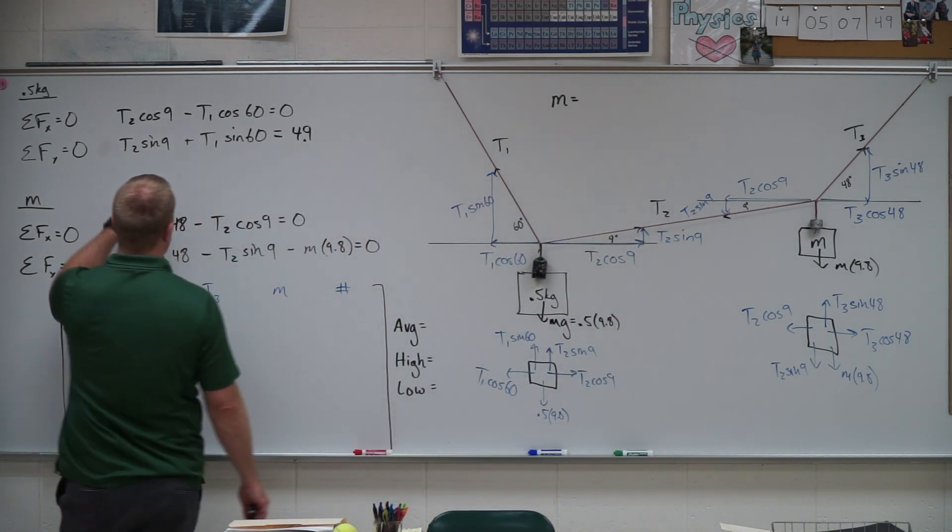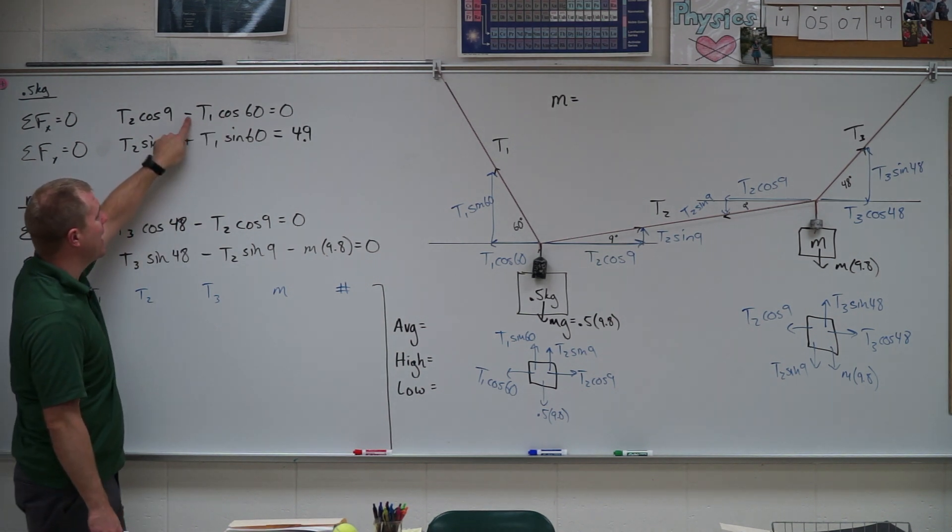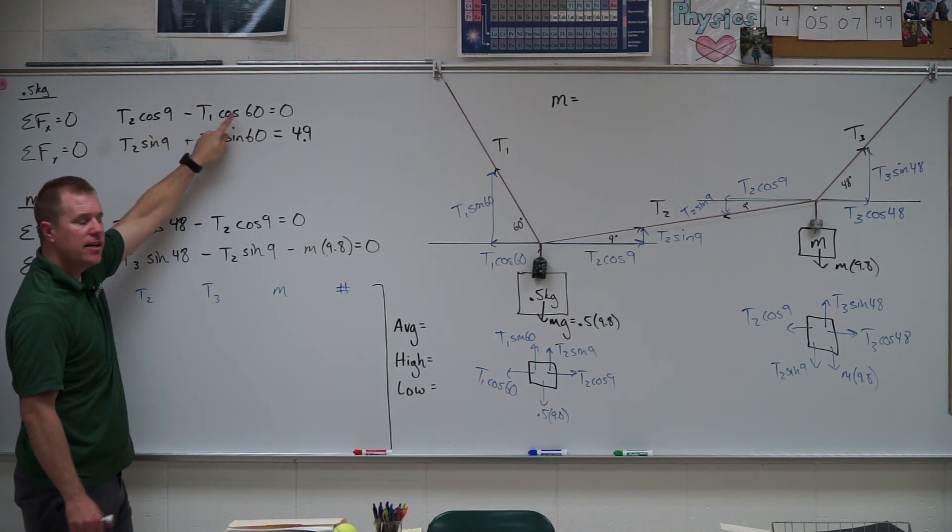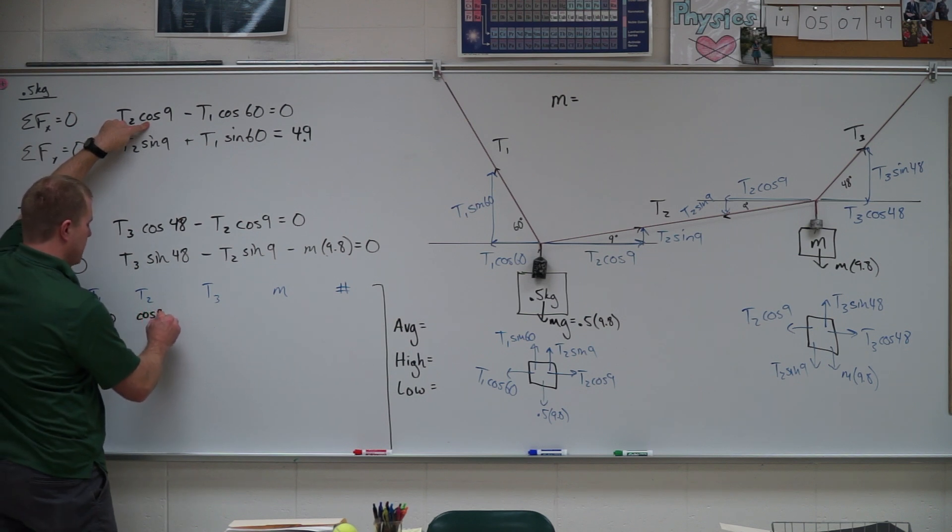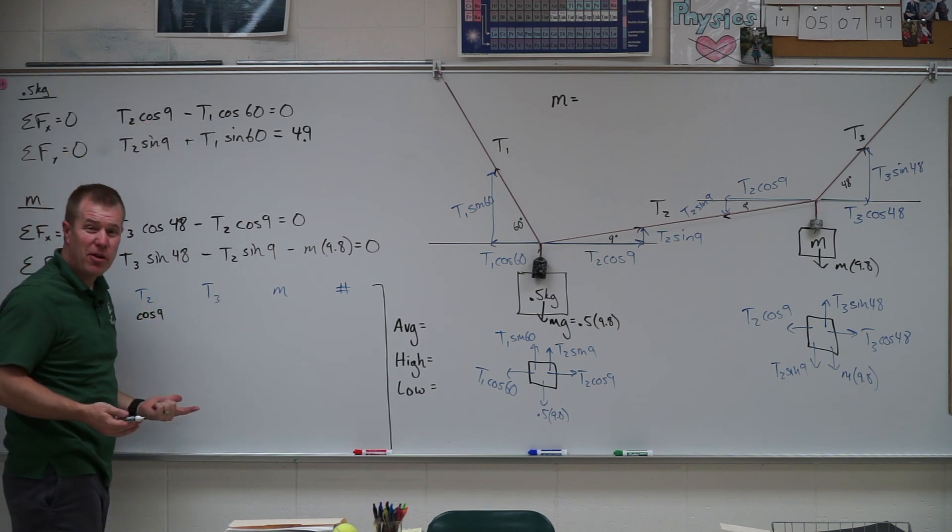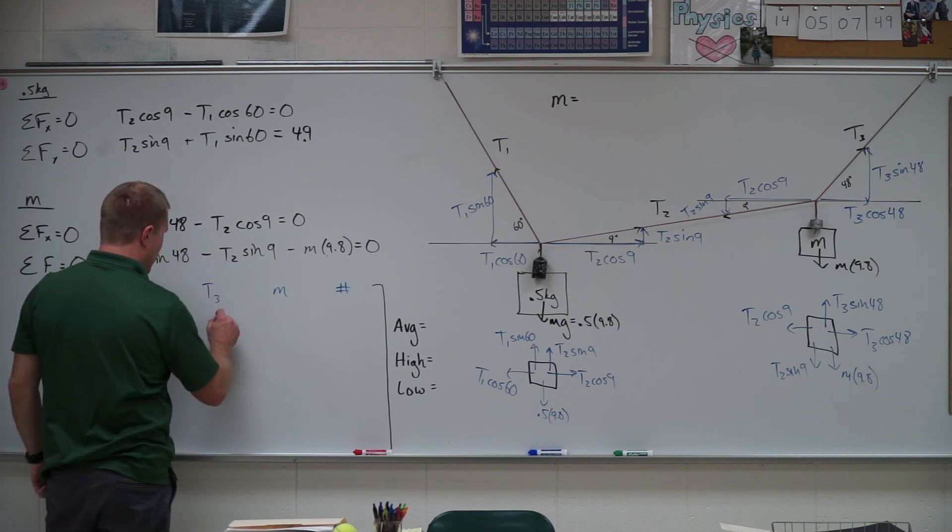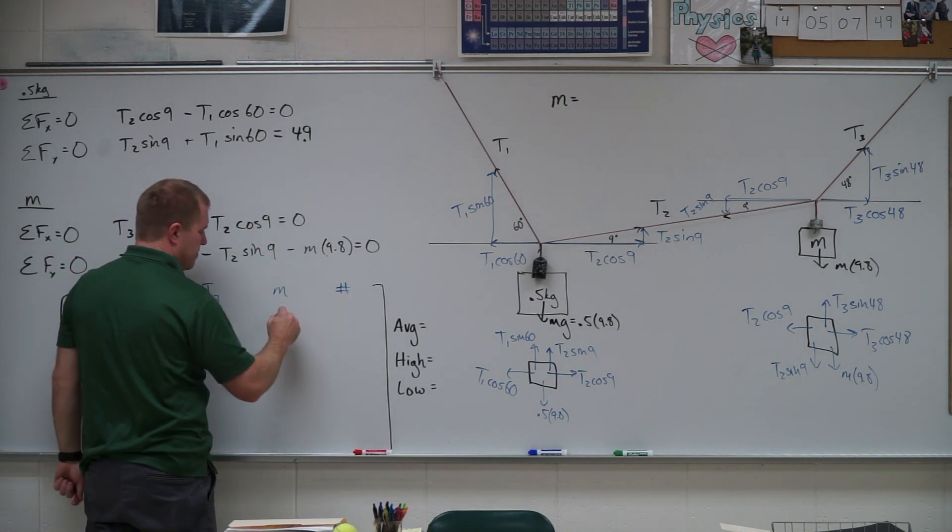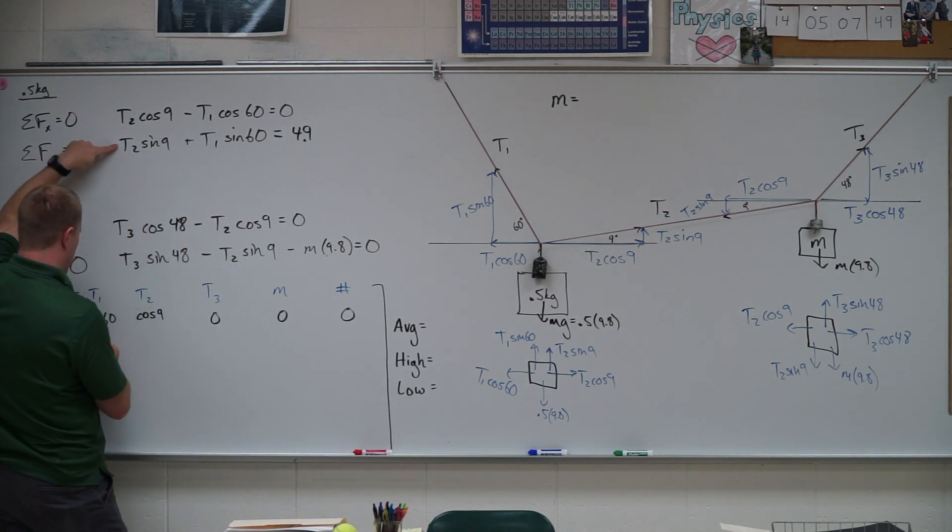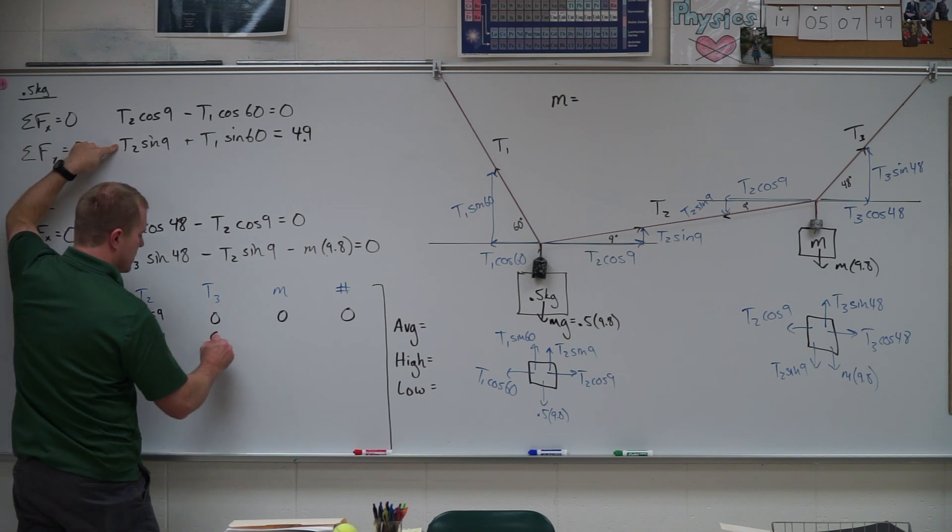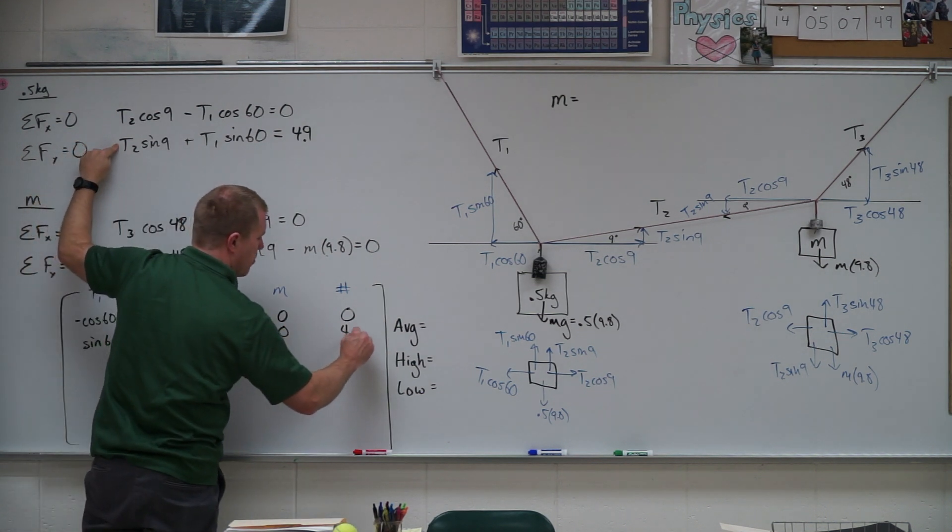And so now when I write out my matrix, all I need to do is put in the coefficients for each of those terms. So T1, you'll notice, is multiplied by negative cosine of 60, so I have negative cosine of 60. T2 is multiplied by the cosine of 9. There is no T3 term, so it must be multiplied by 0. There's no m term, 0, and it all equals 0. Fill in my next one. So now I have the sine of 60, the sine of 9, 0, 0, 4.9.